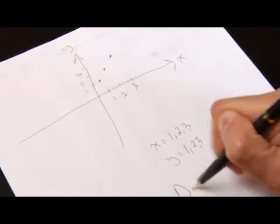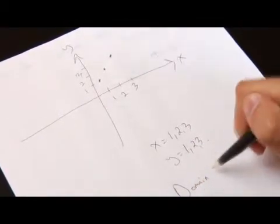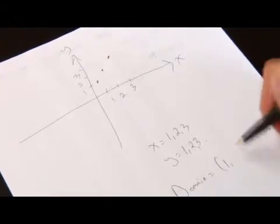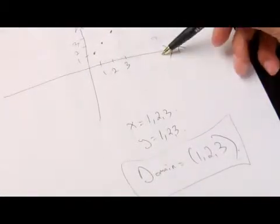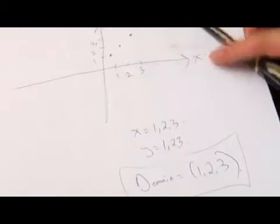So the domain of this graph is going to equal 1, 2, and 3, because the domain is all the x values of this graph which we have drawn. So here we're able to understand the domain of a graph and understand the x values.